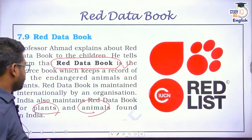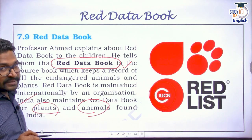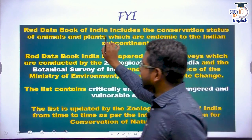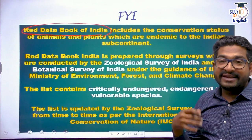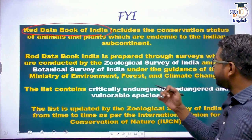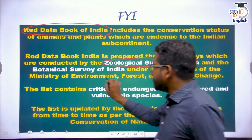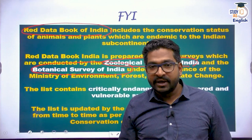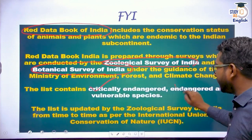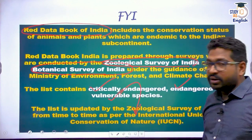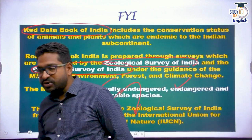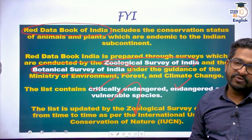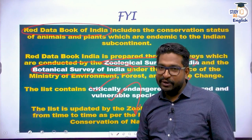India also maintains its own red data book of plants and animals. The red data book of India contains data of animals and plants which are threatened in India, and it is prepared by the Zoological Survey of India and the Botanical Survey of India in collaboration with the Ministry of Environment, Forest and Climate Change. It maintains a list only of the threatened categories — critically endangered, endangered, and vulnerable — and this list is continuously shared and updated with IUCN.